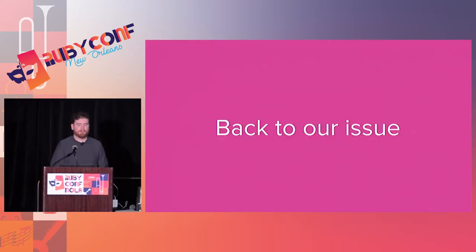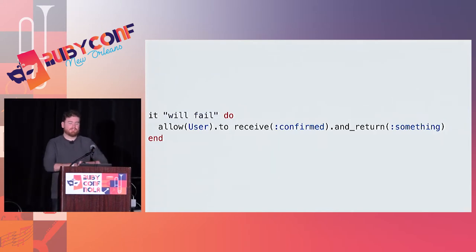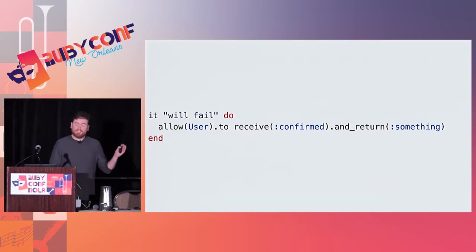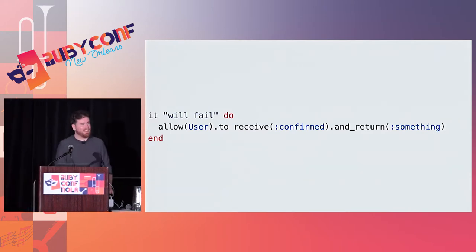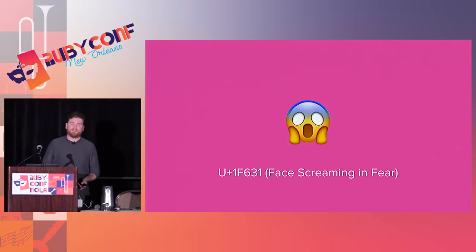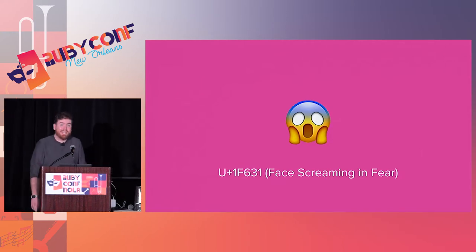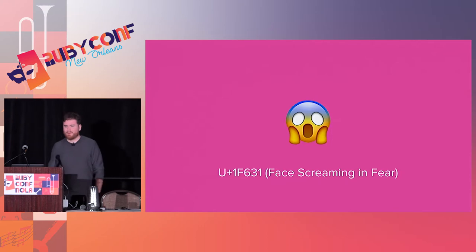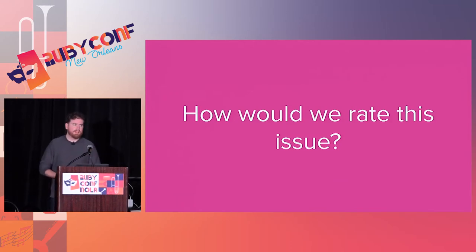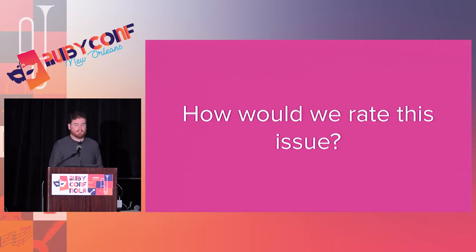Let's get back to our issue and focus on what we're talking about. The Rails issue affected expressions like this — where you say 'allow user to receive' and then some kind of scope method, in this case 'confirmed,' and return something. Executing this simple test would raise an exception. That has to work. That is a very simple expression in RSpec, and ActiveRecord objects are one of the core things that people want to mock on. This is really bad. Before we get too far into debugging, I want to do a little examination of the bug report and think about whether it's good, bad, or how it might be improved.